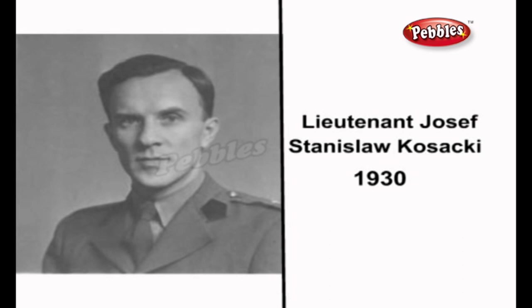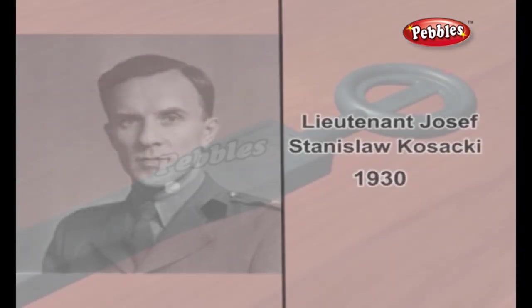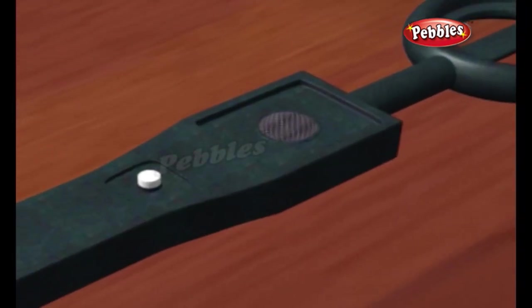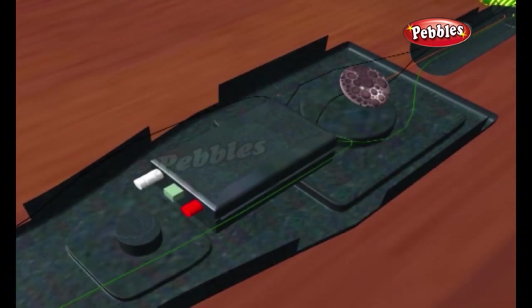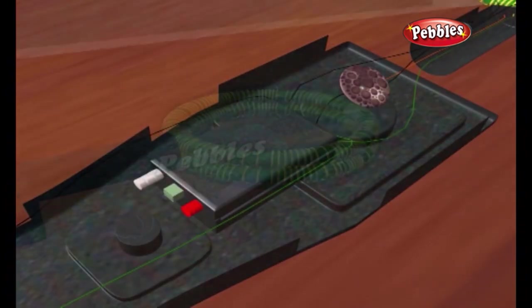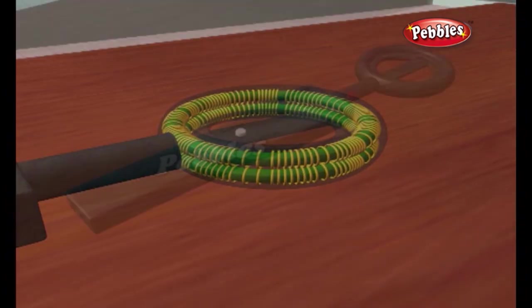Lieutenant Joseph Stanislav Kosaki, a Polish officer attached to a unit stationed in St. Andrews, Fife, Scotland during the early years of World War II, refined the design into a practical detector. A typical metal detector is lightweight and consists of just a few parts: a control box, shaft and search coil.